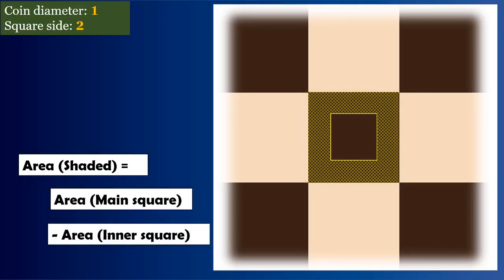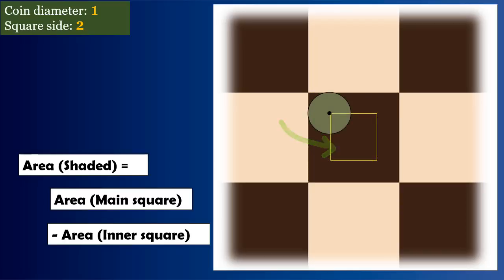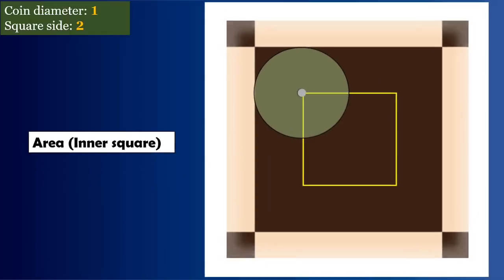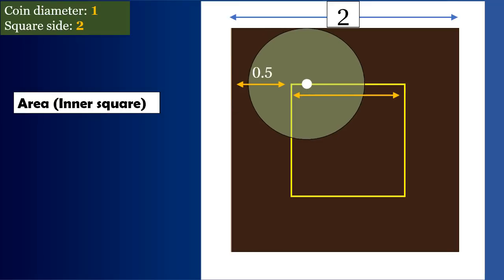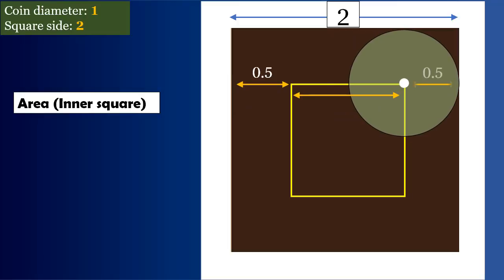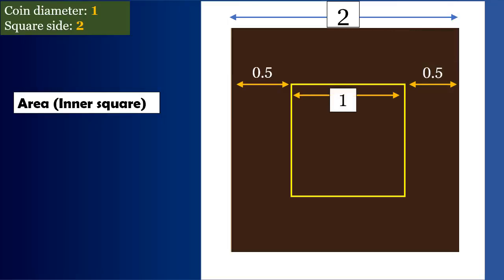Now, first, let's calculate the area of the inner square. The side length of the inner square is two minus radius of the coin, that's one half, minus one half again, and that's equal to one. So its area is equal to one.